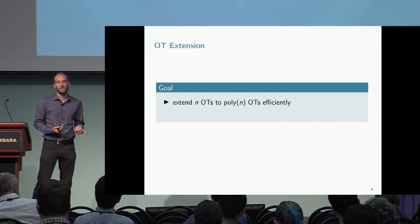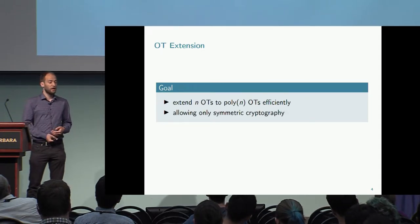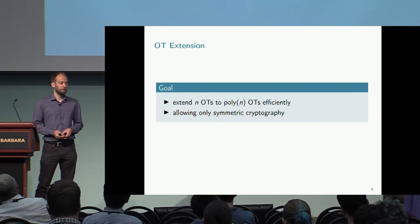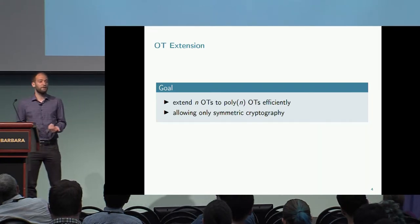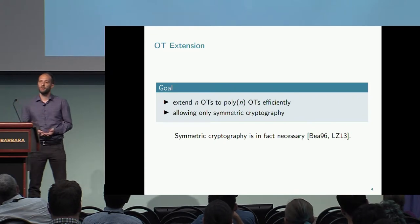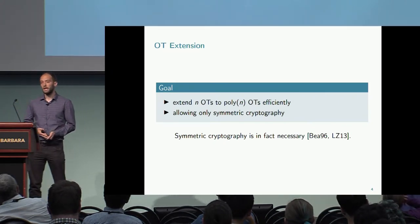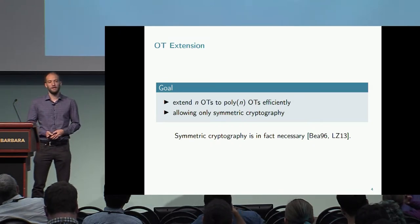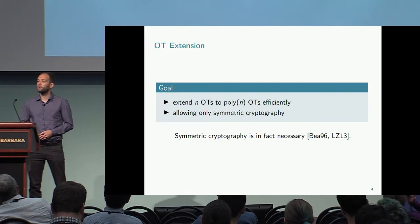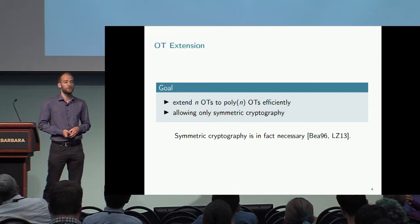By 'efficiently' I mean restricting to only symmetric operations without public key operations. This is also necessary because OT extension cannot be realized in an information-theoretically secure way — shown by Beaver, and later extended by Lindell and Sarasim, who showed that OT extension implies one-way functions. So one-way functions are the bare minimum we need to assume.